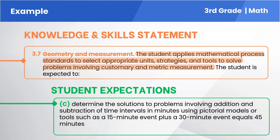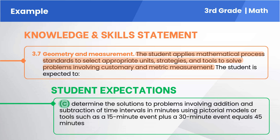The student expectations identify the specific knowledge and skills that students must demonstrate. The letters, such as C as shown, refer to what students are expected to do with regard to a particular knowledge and skills statement. For standard 3.7C, the student is expected to determine the solutions to problems involving addition and subtraction of time intervals in minutes using pictorial models or tools, such as a 15-minute event plus a 30-minute event equals 45 minutes.